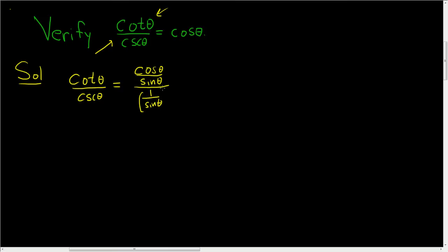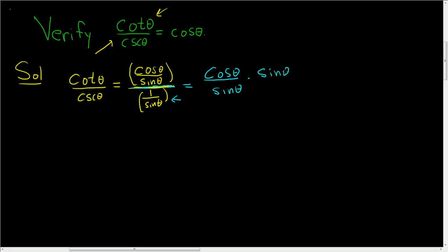We have a fraction over a fraction. This bar here means division. So it's going to be equal to cosine theta over sine theta, times the reciprocal of this — division means multiplying by the reciprocal — so times sine theta divided by 1. The sines cancel, so we just get cosine theta over 1, which is equal to cosine theta.